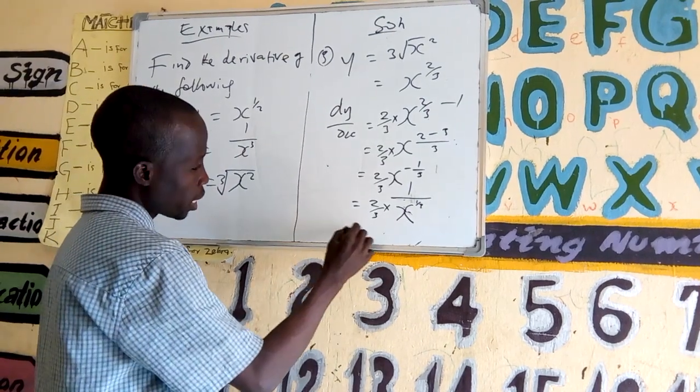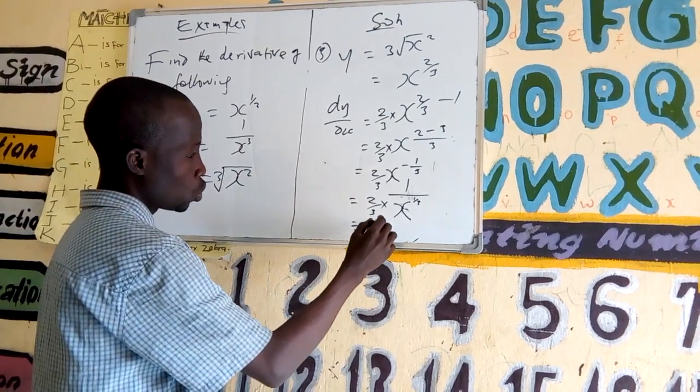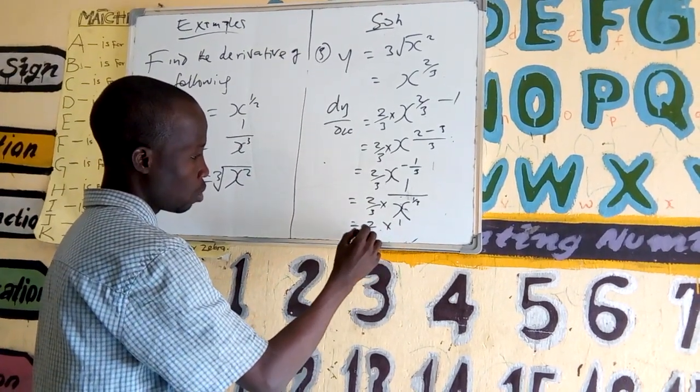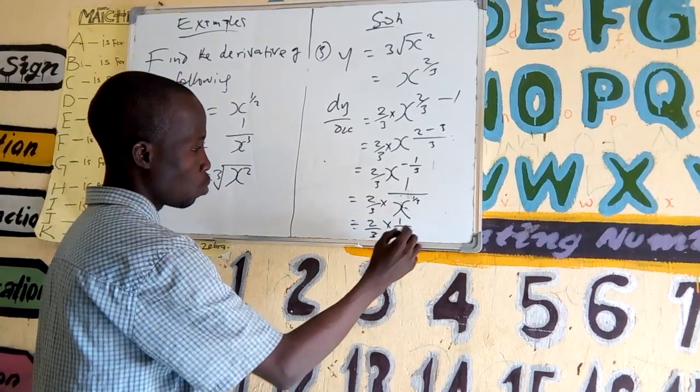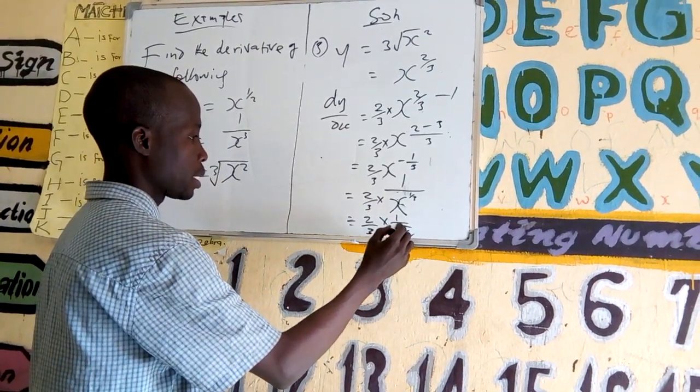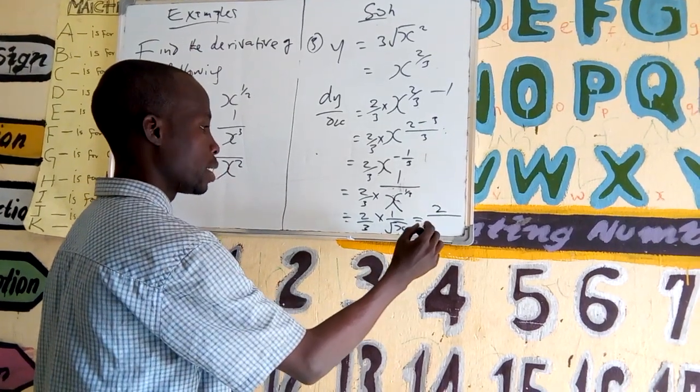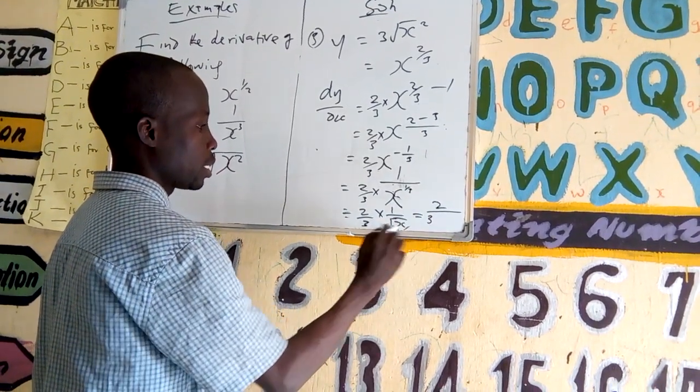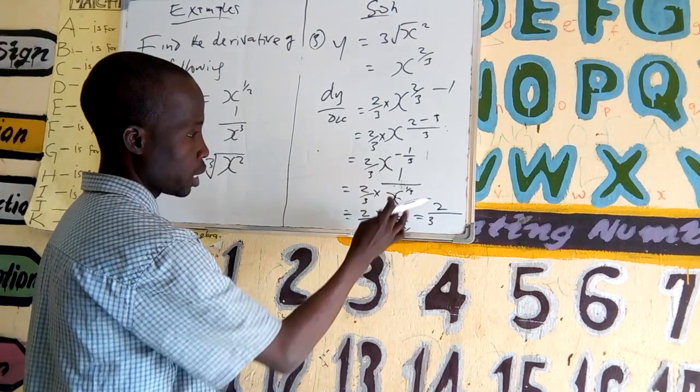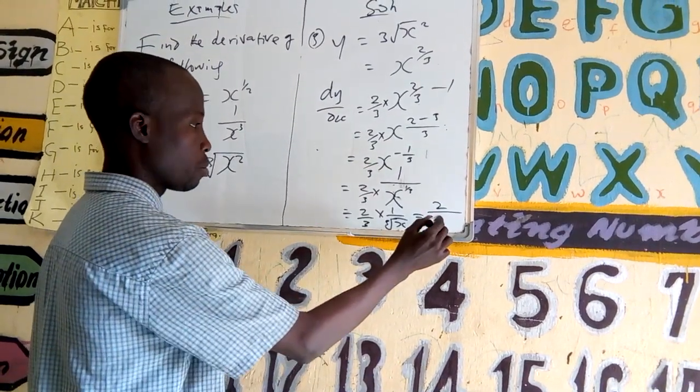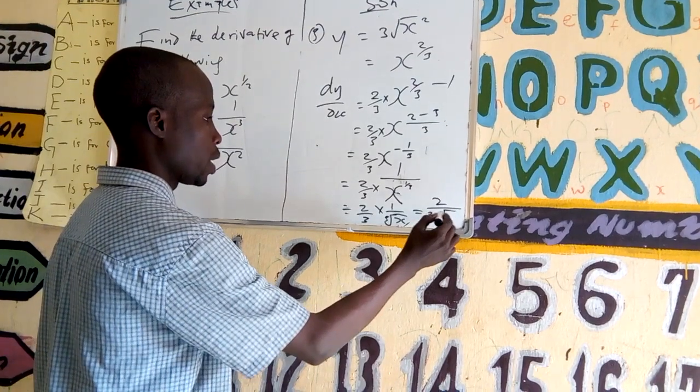So, this equals 2 over 3 times 1 over the root of x. This root is the cube root of x.